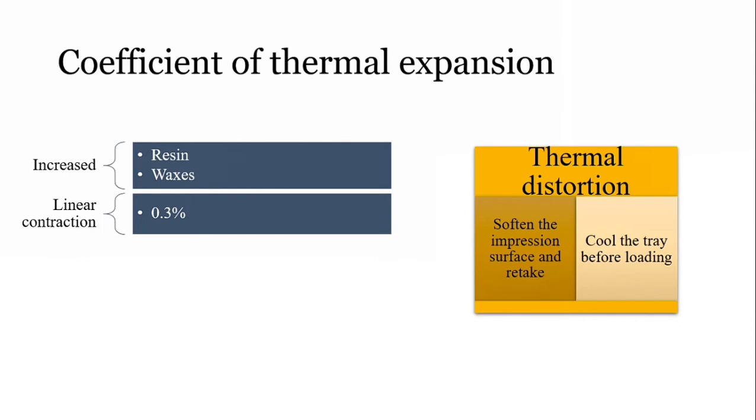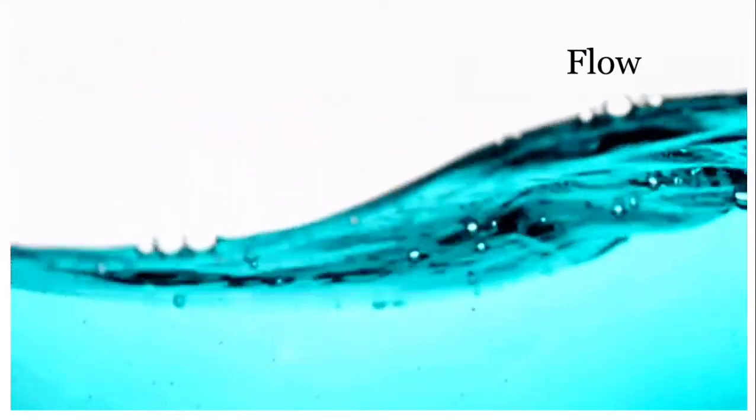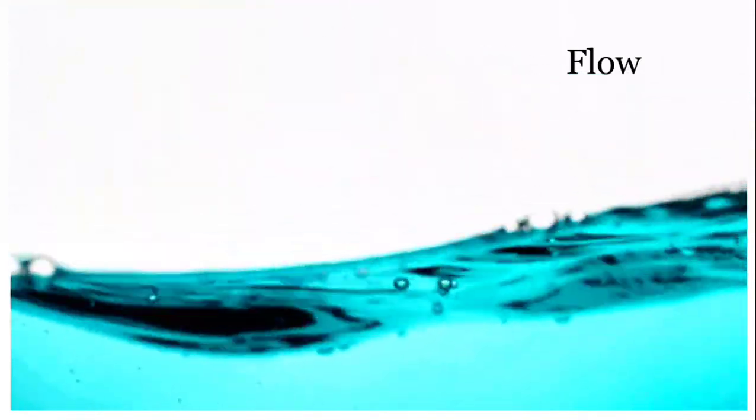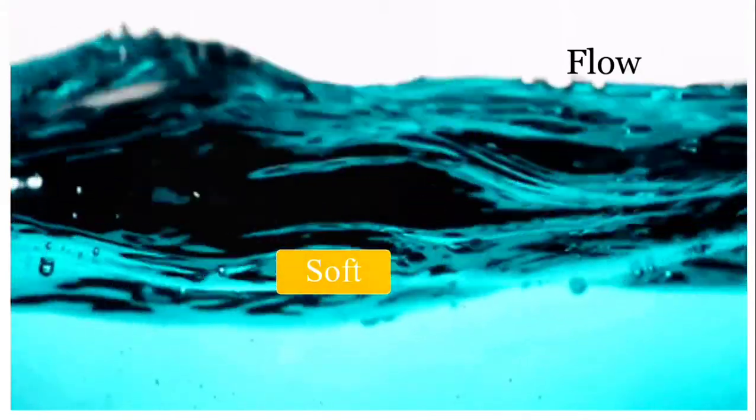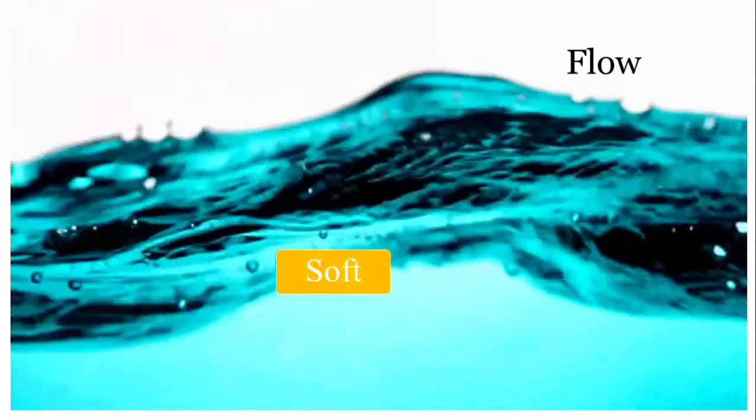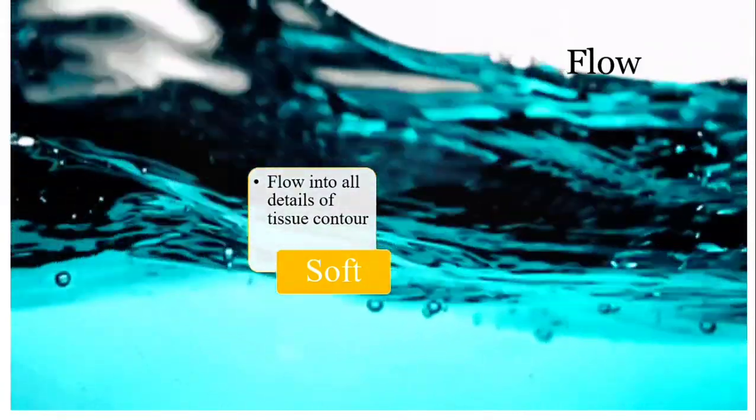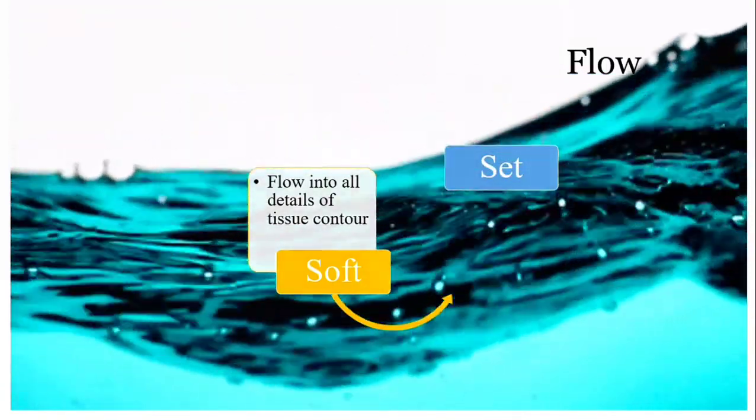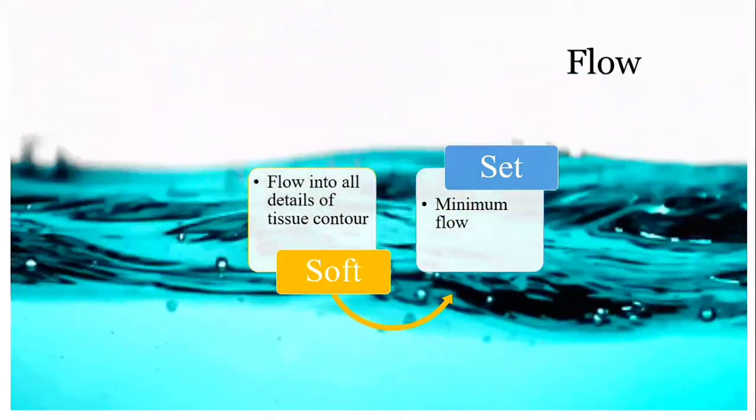What is flow? It is the ability of the material to go into the details and record them. For impression compound, the flow is very poor, so detail reproduction is poor. When it's soft, it should flow into all the details of the tissue contour, and when it's set, it should show very minimal flow. Flow is very low in the case of impression compound.